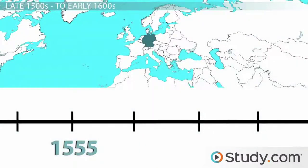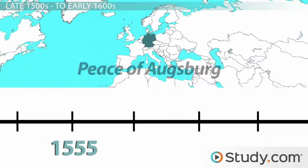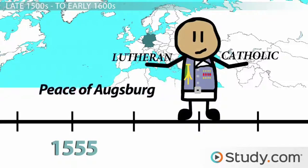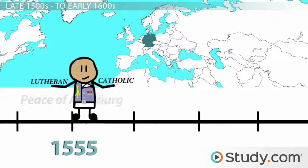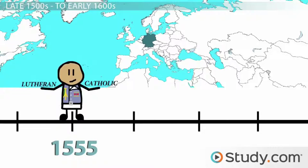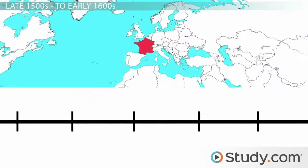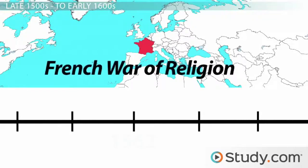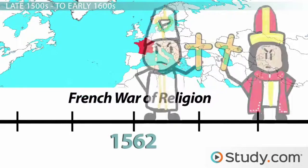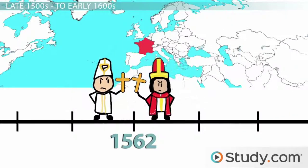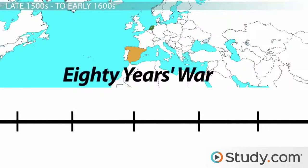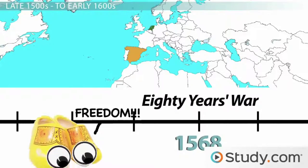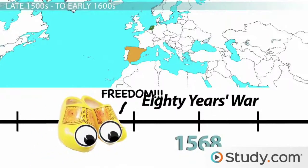In 1555, with the Holy Roman Empire continuing to weaken, the Peace of Augsburg was enacted, giving the Princes of Germany the right to practice Catholicism or Lutheranism as each saw fit. Sadly, only Lutheranism and Catholicism were recognized. At this time, France was also having some issues of her own as the French War of Religion broke out in 1562 — yet another clash between Catholics and Protestants in Europe. Adding to the religious and political upheaval on the continent was the Eighty Years' War, beginning in 1568, in which the Dutch territories fought for their freedom against Catholic Spain.